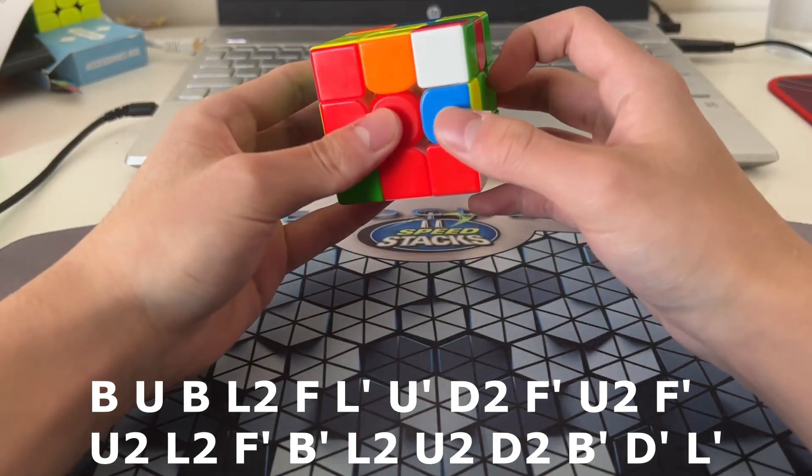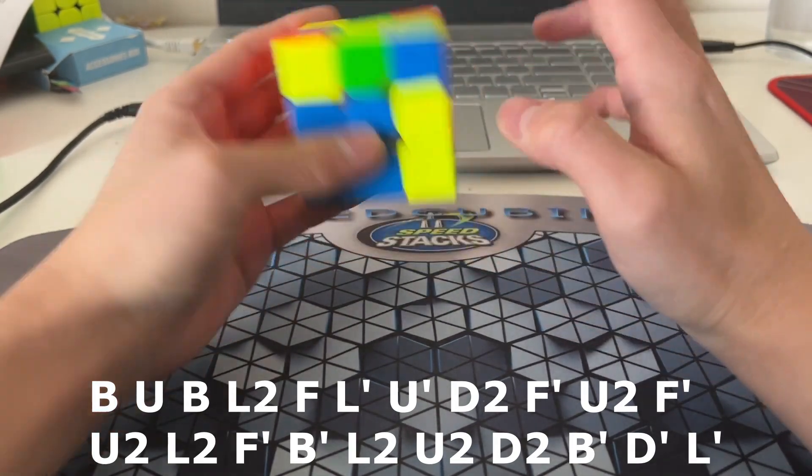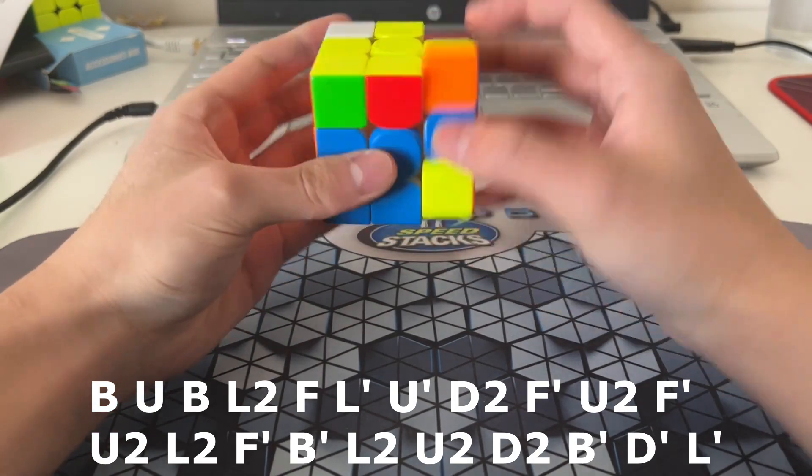And I'll keyhole the edge in, like I said before. And then I'll solve... Instead of solving like this, I'll solve like this. That way, I can do both of these rotationless. And I can just flow into them.